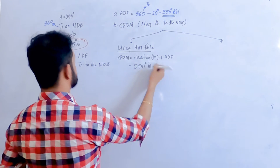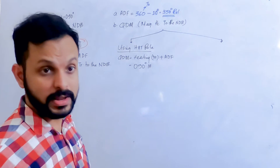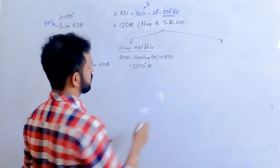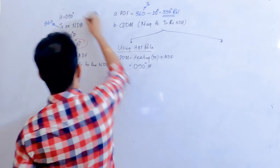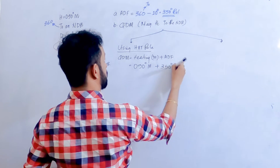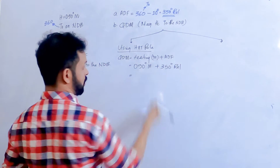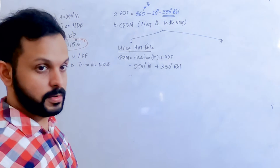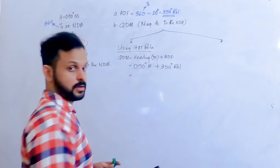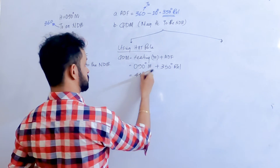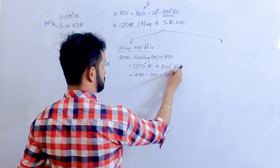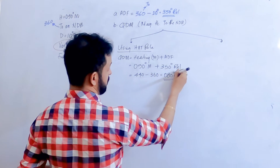Since we are finding the QDM, the heading has to be in magnetic. The heading is 090 degrees magnetic, plus the relative bearing which is 350. That comes to 440, and 440 minus 360 is 080 degrees magnetic.